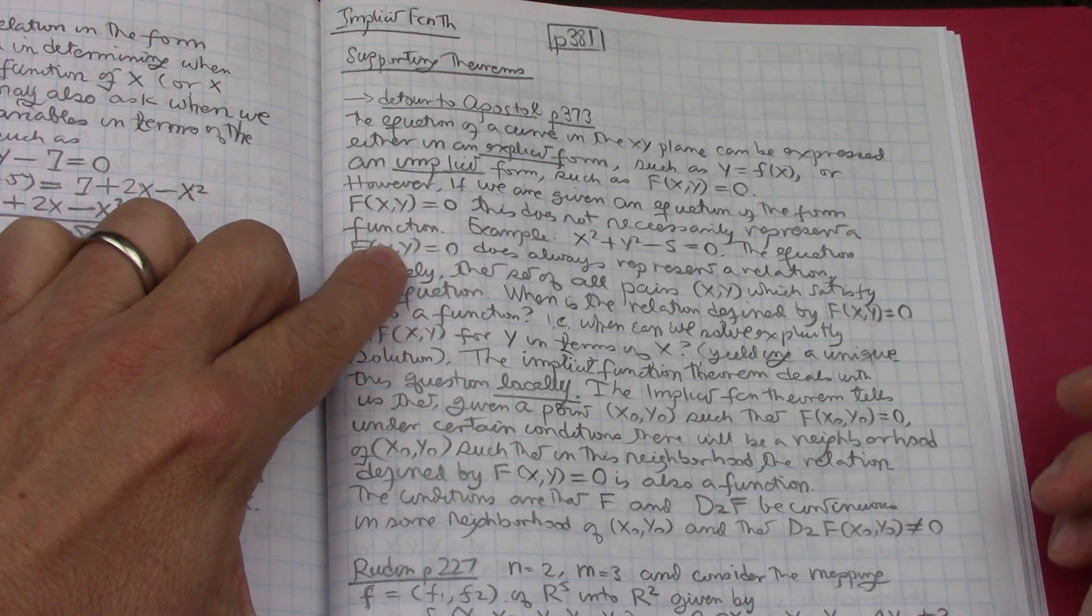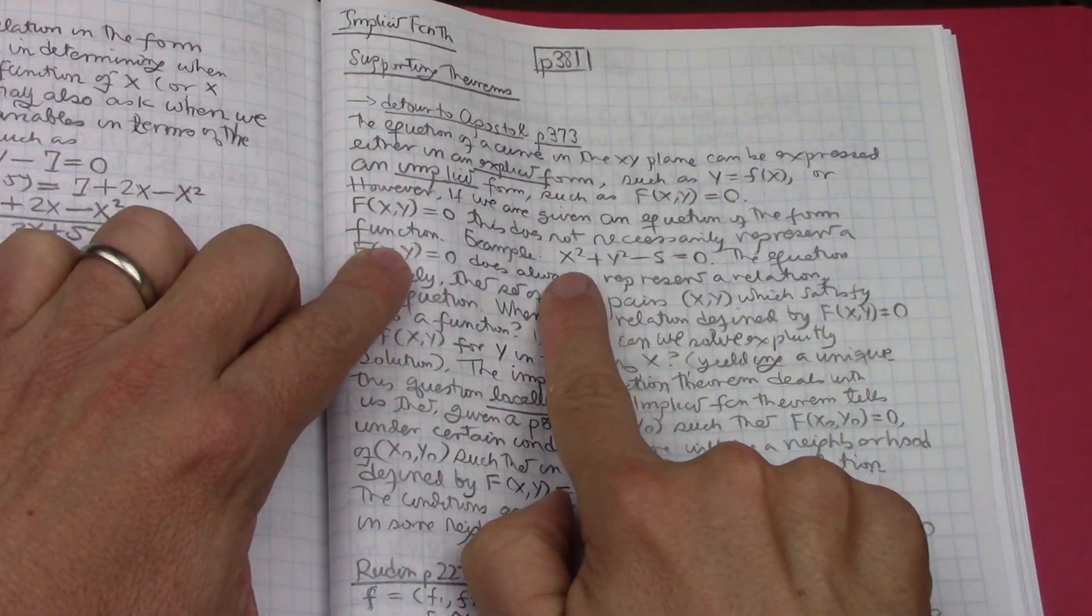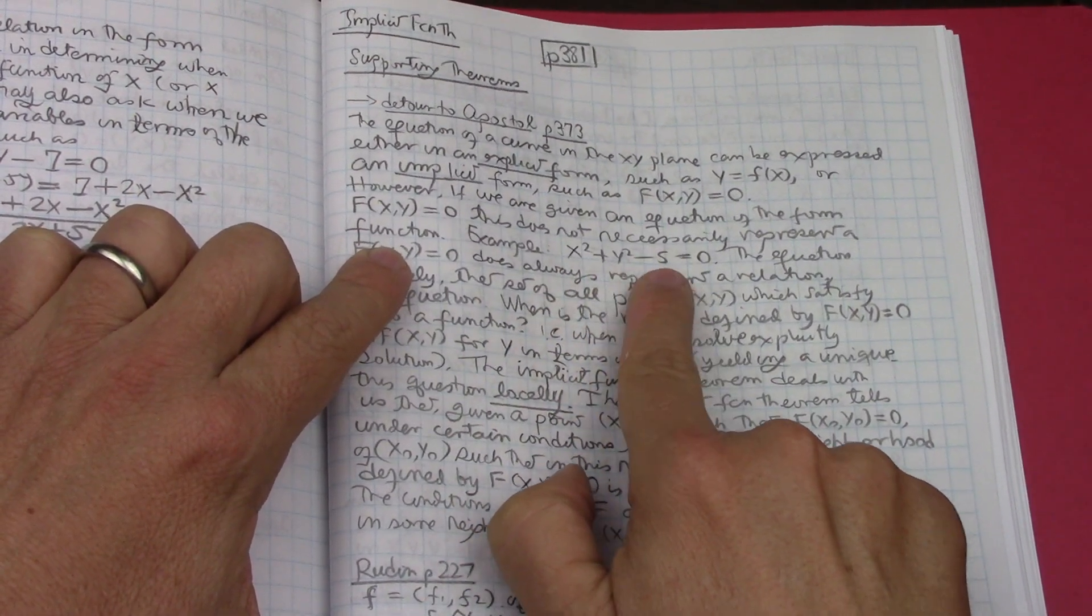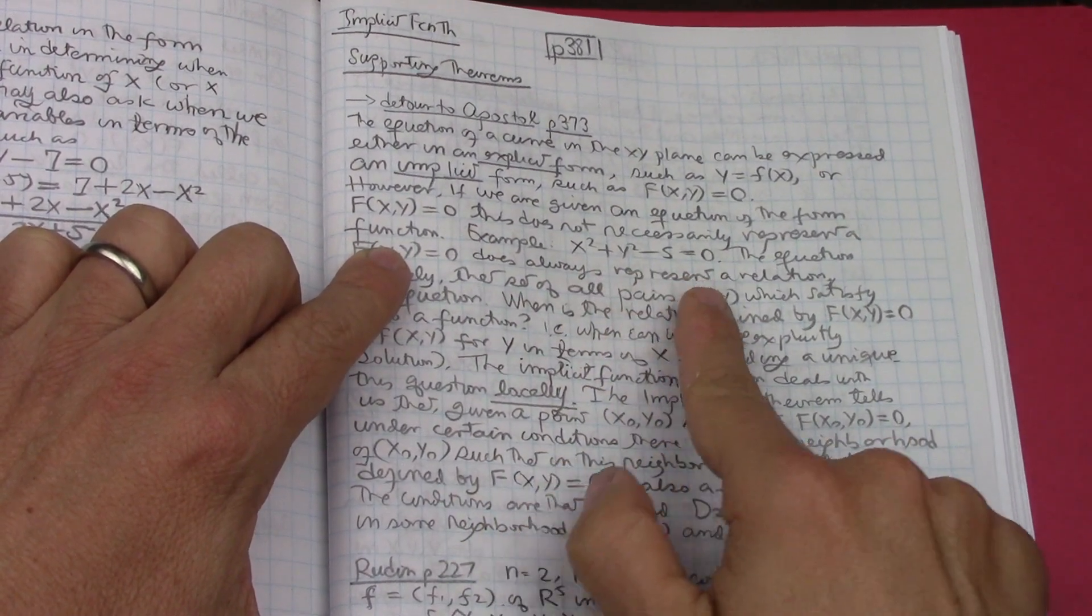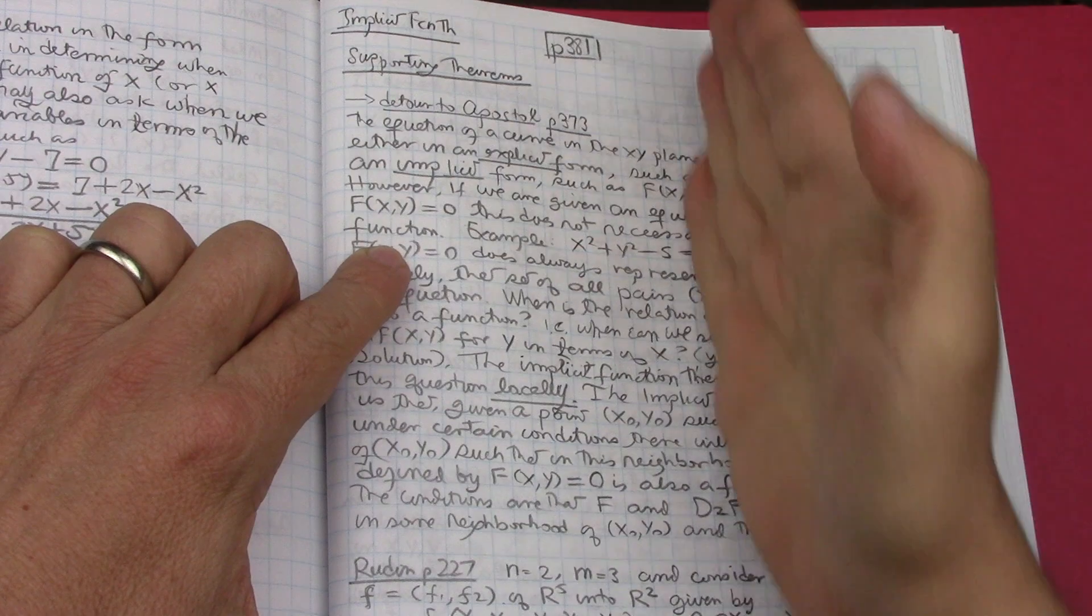This does not necessarily represent a function. He uses the example of a circle: x squared plus y squared equals five, or x squared plus y squared minus five equals zero.